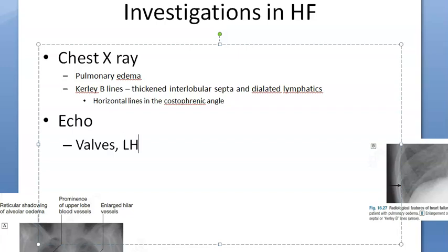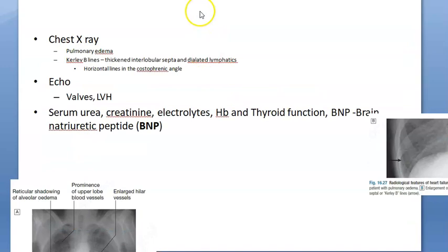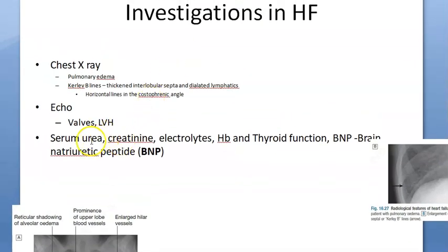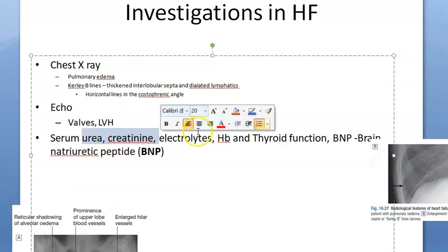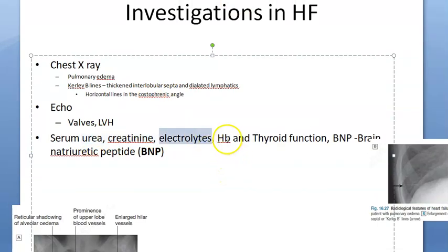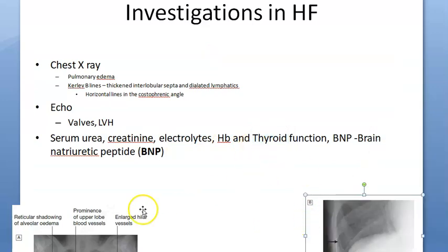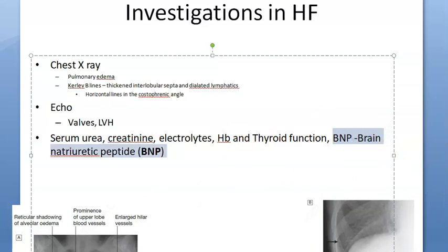You should also see left ventricular hypertrophy on echo. You want to check kidney function — urea and creatinine levels — and electrolytes. Check if the person has anemia or thyroid problems such as thyroid toxicosis. BNP — brain natriuretic peptide — is very important.